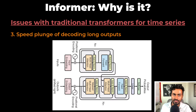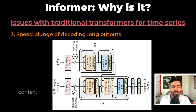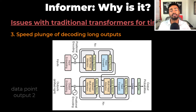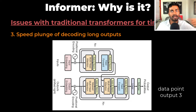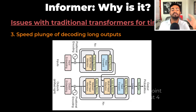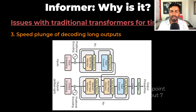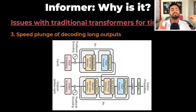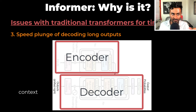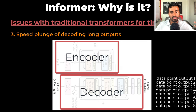The third issue is the speed plunge in predicting long outputs. In the original Transformer, the decoder generates outputs one time step at a time, and for very long outputs with hundreds or thousands of time steps — as is common in time series data — this makes inference a very long process. To reduce this time, the Informer makes use of generative inference, in which the outputs of all timestamps are generated at the same time.